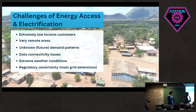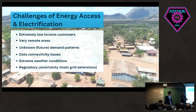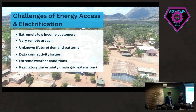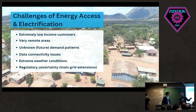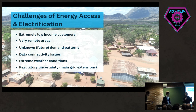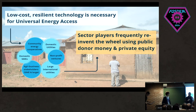We need to speed up the process of electrification. Electrifying areas that haven't been electrified in the past brings particular challenges: extremely low-income customers, extremely remote areas — and remote means something very different from Belgium or Europe — unknown future demand patterns. You can't use AI or machine learning because people have never used electricity, so you have no data. There are also data connectivity issues, extreme weather conditions, and regulatory uncertainty in politically unstable countries.